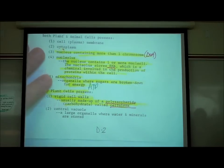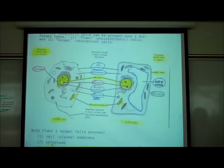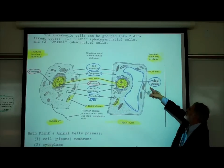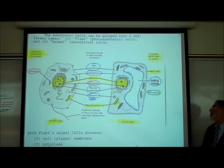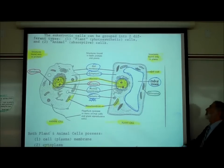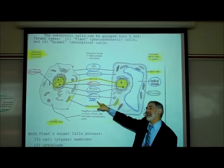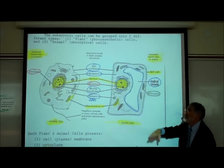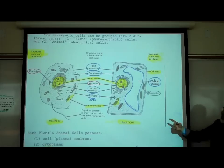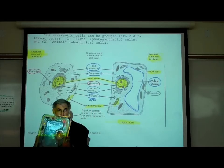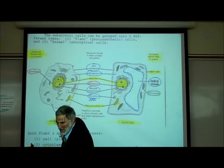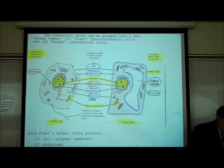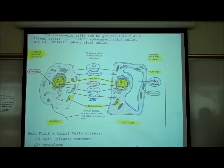What else do plant cells have that animal cells lack? There's a really large vacuole occupying most of a plant cell called the central vacuole. Animal cells don't have that. You can see in our model this large central vacuole, and its purpose is to store water, nutrients, and waste products — water, minerals, and so on.